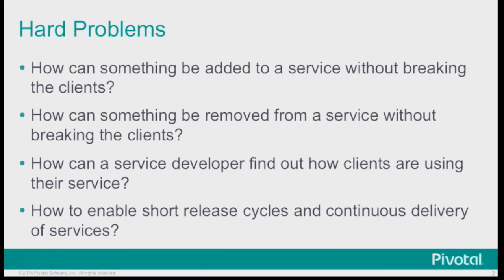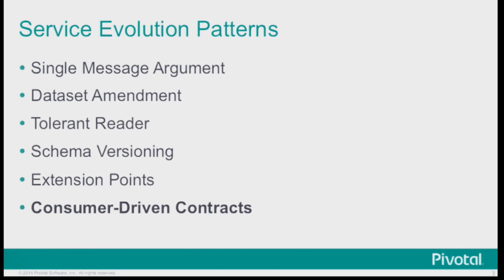When we look at these hard problems with building APIs, what are some things we've tried? If you look at service evolution patterns, you'll see things like single message argument — think of writing a regular Java method. You start with one argument, then two, then three, and pretty soon you make a big object. Once you have the big object, you can add and remove fields more easily and people calling you don't break. This is basically saying you have one giant JSON object as input and you do whatever you want with it. You can also have data set amendment, where you have specific points in your schema where you can add things.